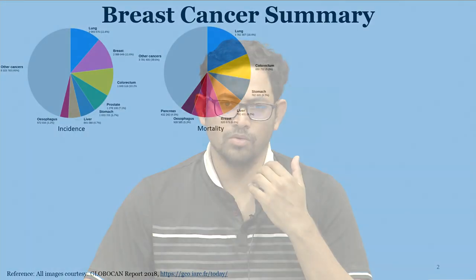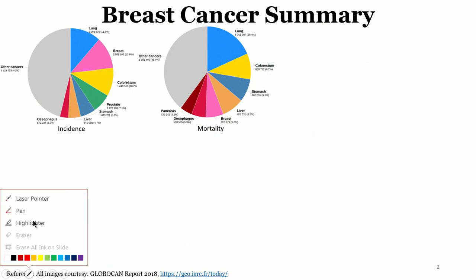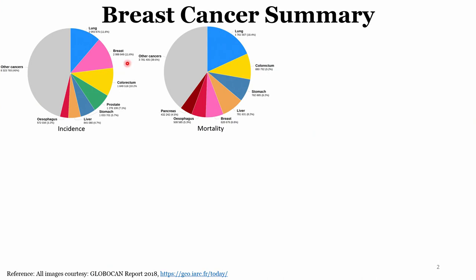We will look at how we can use such parameters to diagnose certain diseases such as breast cancer. First, why breast cancer? As you can see, breast cancer is the second most highest number of cases in terms of incidence rate, and in the case of mortality it is the fifth number of cases.